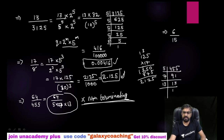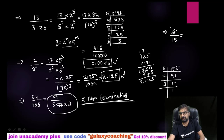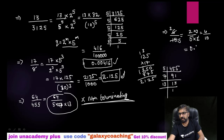Whenever it is non-terminating we cannot find the answer; only when terminating can we proceed. Now I want to show this next question because some confusion arises. If you directly find the factors of 15, you get 3 and 5 — students will write non-terminating because of the 3. But first you must reduce the fraction. 2 over 15 reduces, and then the denominator is just 5, which is terminating. Multiplying by 2 gives 4 over 10, so the answer is 0.4.